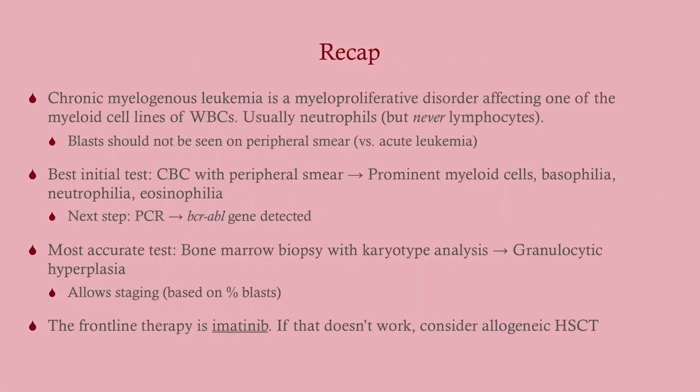To recap: CML is a myeloproliferative disorder affecting one of the myeloid cell lines, usually neutrophils but never lymphocytes. Blasts should not be seen on peripheral smear — that would be AML. Best initial test: CBC with peripheral smear showing prominent mature myeloid cells, basophilia, neutrophilia, eosinophilia. Next step: PCR for BCR-ABL. Most accurate test: bone marrow biopsy with karyotype analysis for staging based on blast percentage. Frontline therapy: imatinib, a tyrosine kinase inhibitor targeting BCR-ABL from the t(9;22) translocation. If that fails and the patient is a candidate, bone marrow transplant.